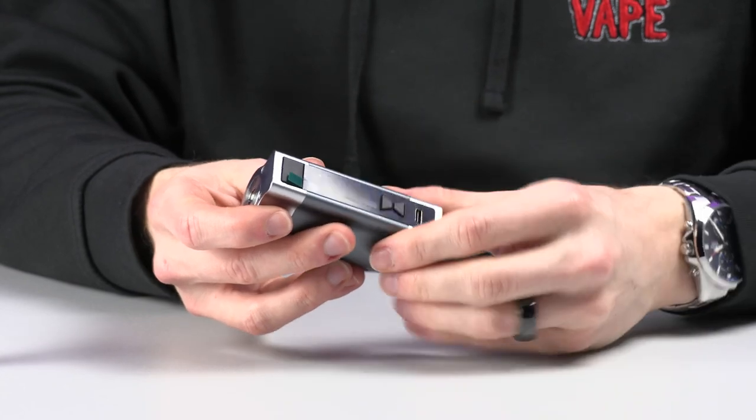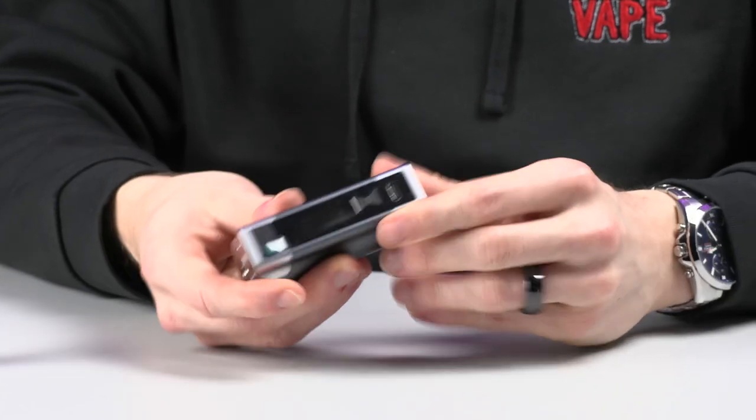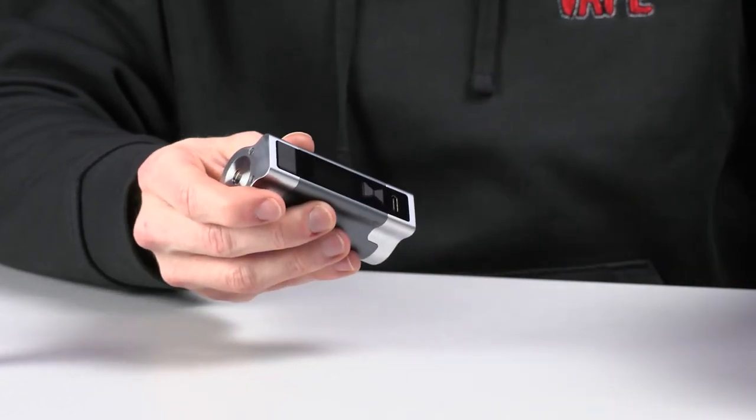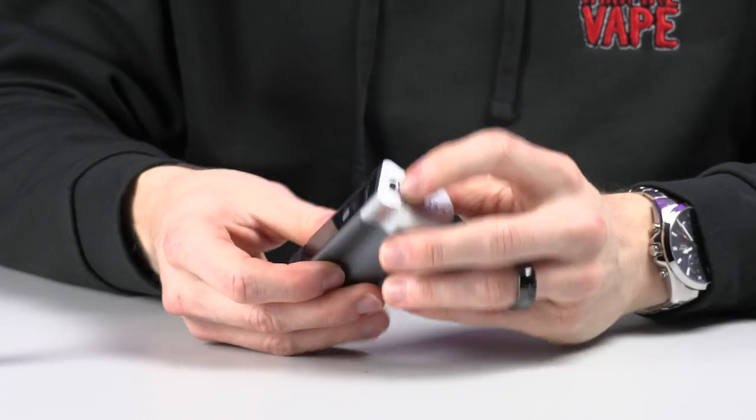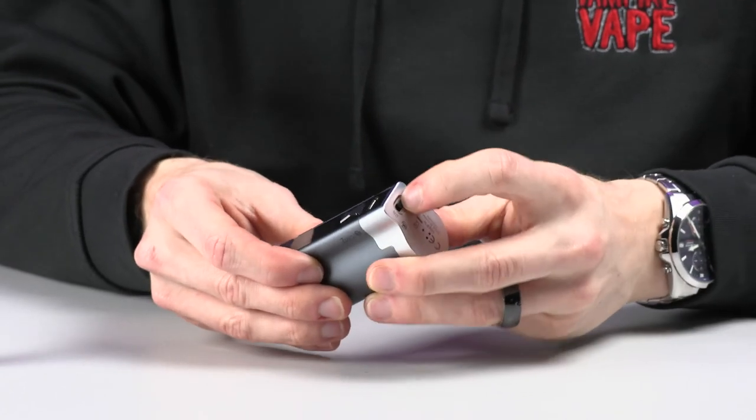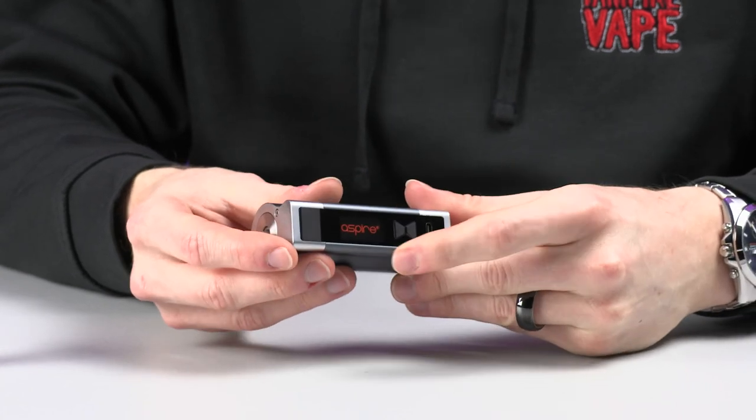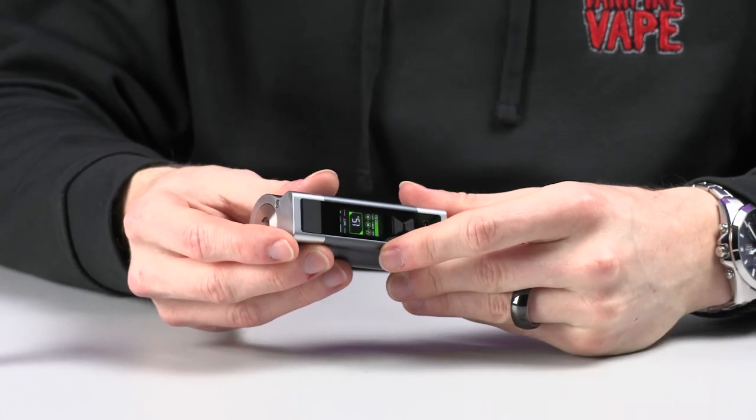So to turn this one on, instead of just clicking the button, we actually have to turn on the switch on the bottom. But first, let me take this screen protector off. Now on the bottom just there, just change that dial from off to on, and then the device will start up.